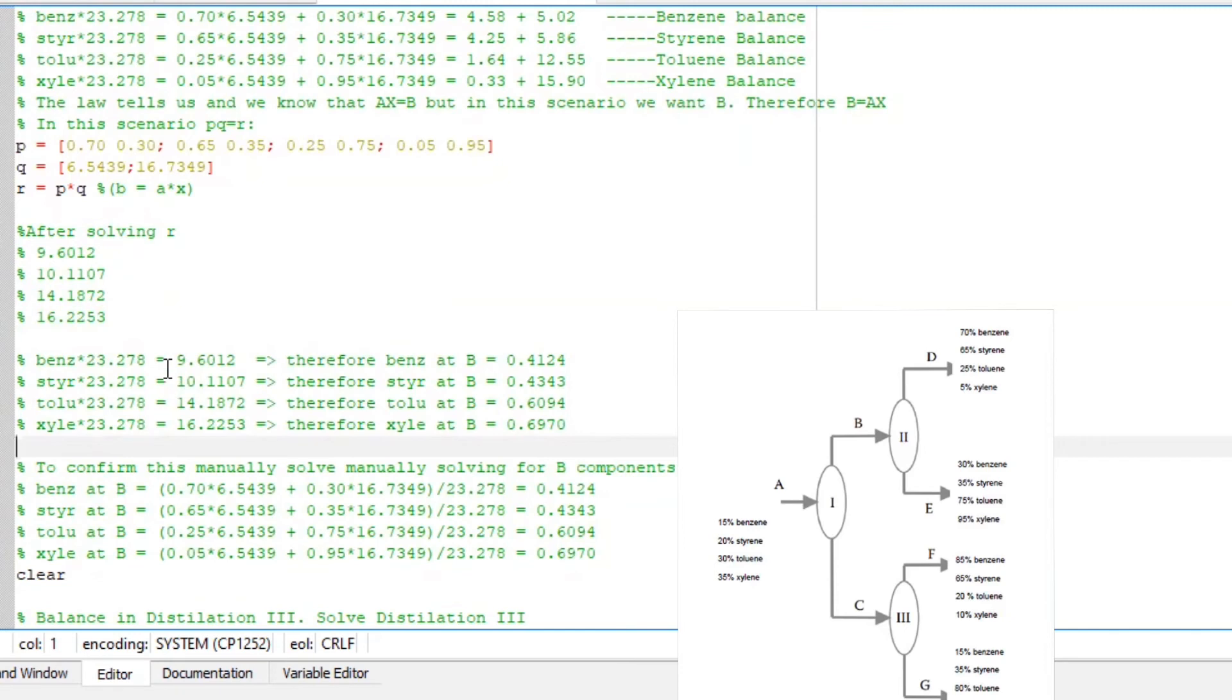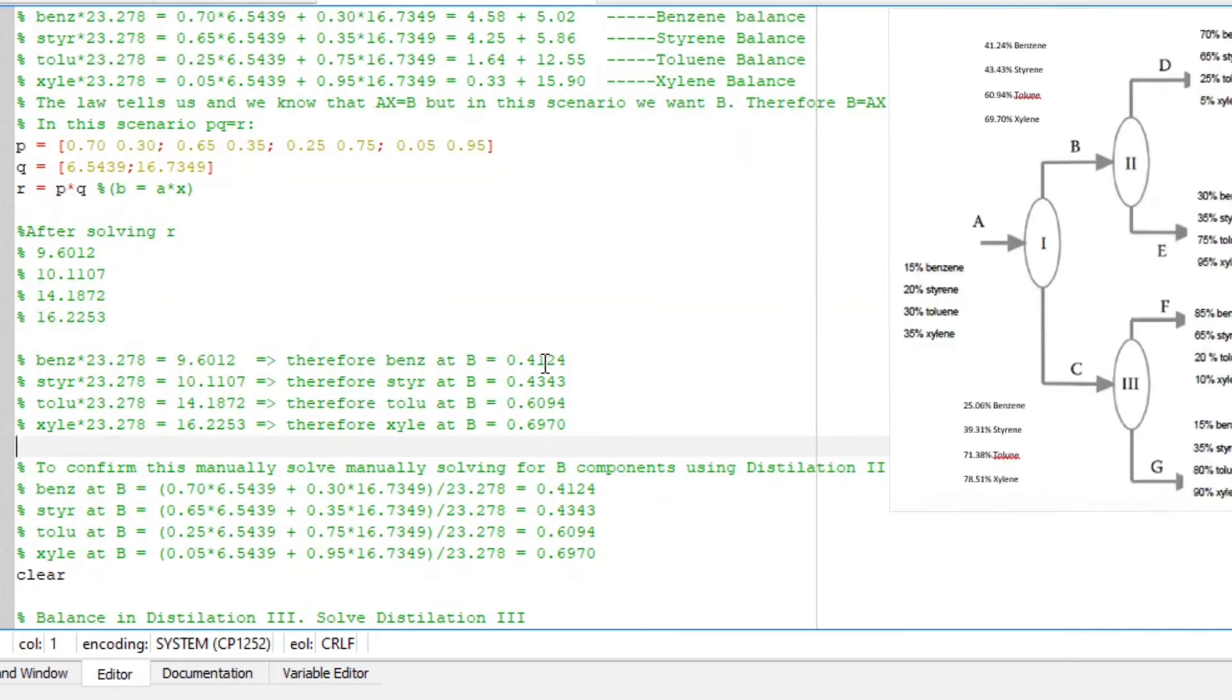This simply means we have 0.4124 moles of benzene in B and 0.4343 moles of styrene in B.